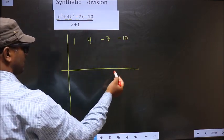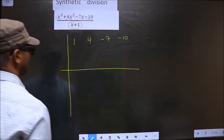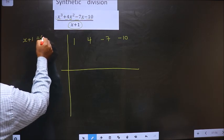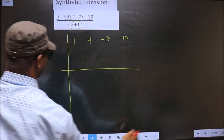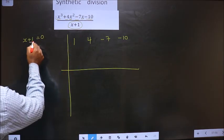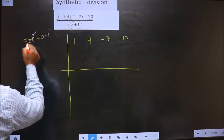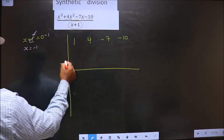Now we should equate the denominator to 0 and get x value from it. That is x plus 1 equal to 0. Now to get x value from here, we should remove plus 1. So you subtract 1, you get x equal to minus 1. This you should write here.